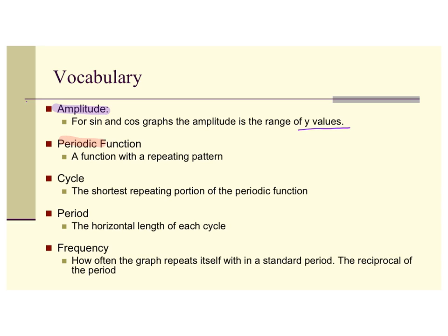Next we have periodic functions. You already use a lot of periodic functions. Months of the year are periodic — every 12 months you're back to it being April. The whole year cycles January through December all the time. Your days are periodic: 24 hours with a certain number of hours of sunlight and dark. So periodic means it repeats itself. A periodic function has a repeating pattern. A cycle is the shortest portion of that function, and the period is the horizontal length. Your amplitude is your vertical size and your period is your horizontal size.